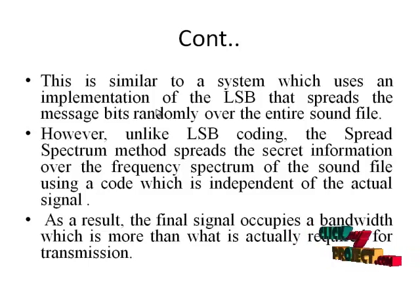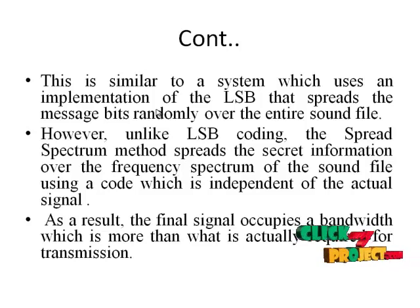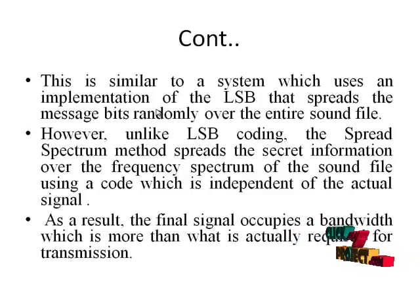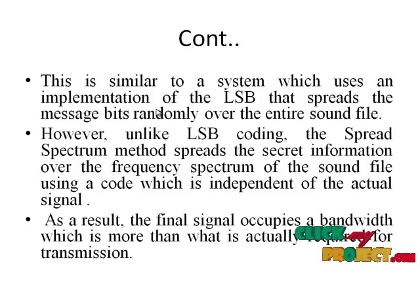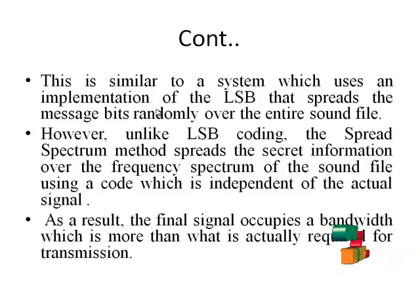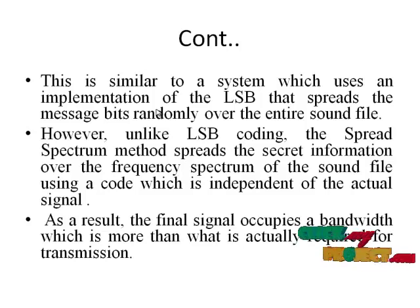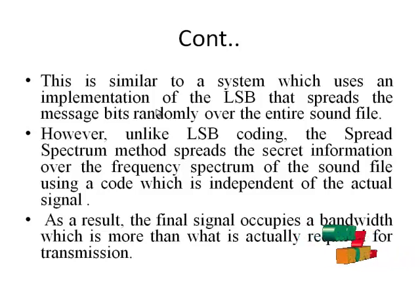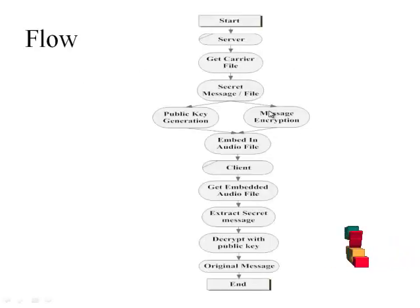However, unlike LSB coding, the spread spectrum method spreads the secret information over the frequency spectrum of the sound file using a code which is independent of the actual signal. As a result, the final signal occupies a bandwidth which is more than what is actually required for transmission.